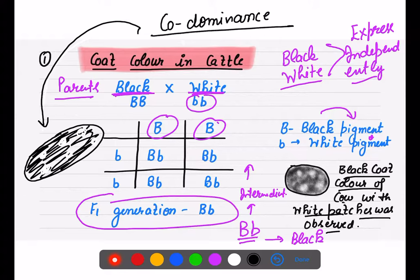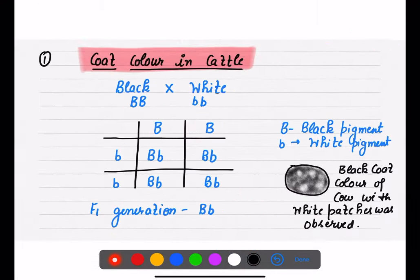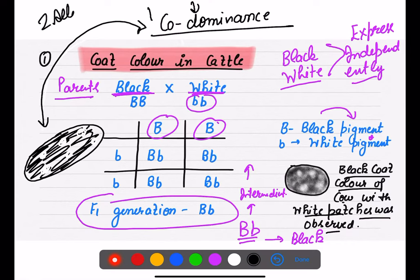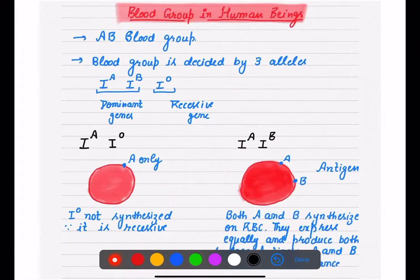Two alleles can express independently. This difference from Mendelian dominance is due to the co-dominance phenomenon. Whenever you write these definitions in exams, write them very carefully.